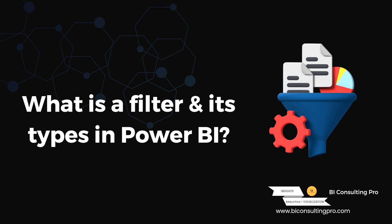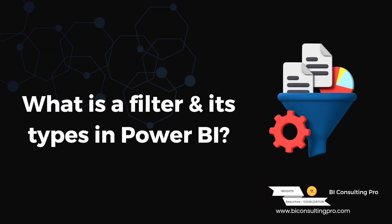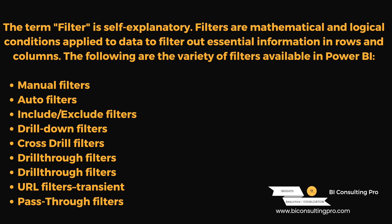The next question is: what is a filter and its types in Power BI? Filter is self-explanatory — it filters your data. In Power BI we have different kinds of filters: slicers, and filters applied at different levels. If your interviewer asks about different filters available in Power BI desktop, you can apply a filter on a visual, on a particular page, or on all pages — those are the three kinds. Apart from that there are others such as drill-through, drill-down, cross drill-through, URL filter, and transient pass-through filter.